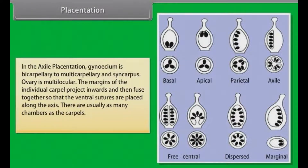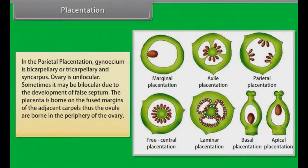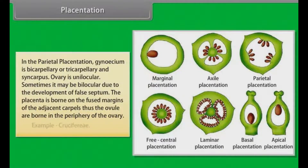In axile placentation, gynoecium is bicarpellary to multicarpellary and syncarpous. Ovary is multilocular. The margins of the individual carpel project inwards and fuse together so that the placenta is placed along the axis. There are usually as many chambers as the carpels; example, Malvaceae. In parietal placentation, gynoecium is bicarpellary or tricarpellary and syncarpous. Ovary is unilocular, but sometimes bilocular due to the development of a false septum. The placenta is borne on the fused margins of the adjacent carpels, so the ovules are borne in the periphery of the ovary; example, Cruciferae.